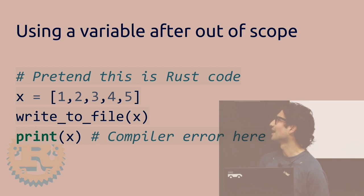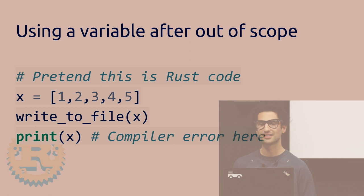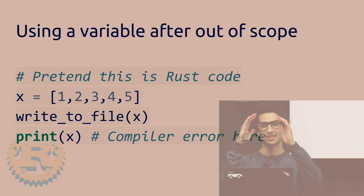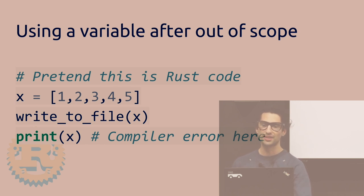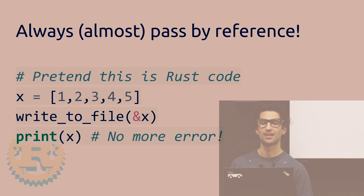This is actually Python code but I'm using it to illustrate Rust behavior. You have X equals a list, then you pass it to a write-to-file function. What happens is the variable X gets passed to the function and is no longer owned by X — it's owned by the variable inside the write-to-file function. When you try to print X outside, that function goes out of scope and the variable is deleted. The fix is to pass by reference using the ampersand. This is done implicitly in Python, but in Rust you have to explicitly do it.